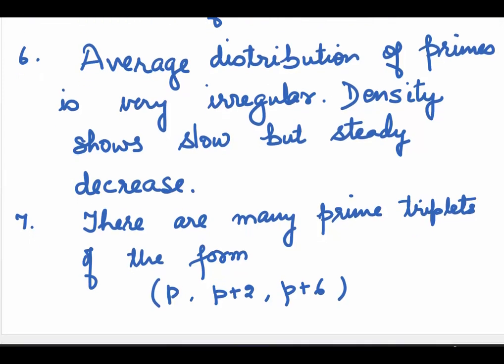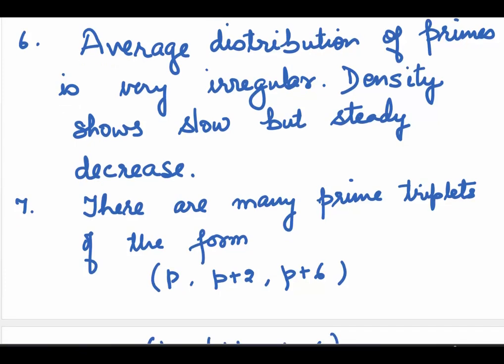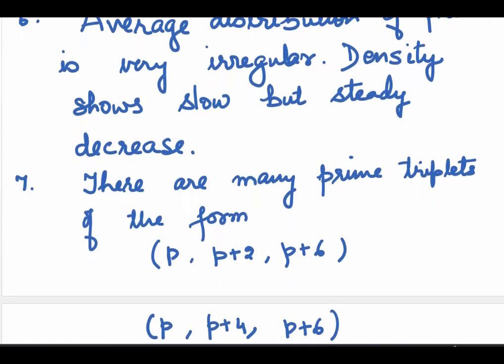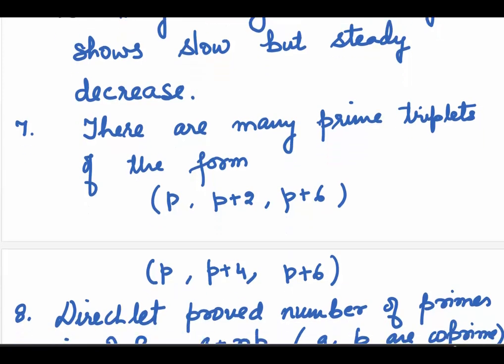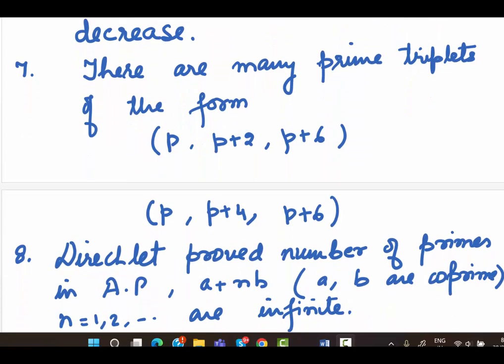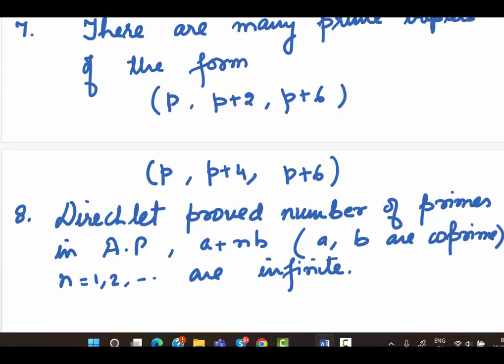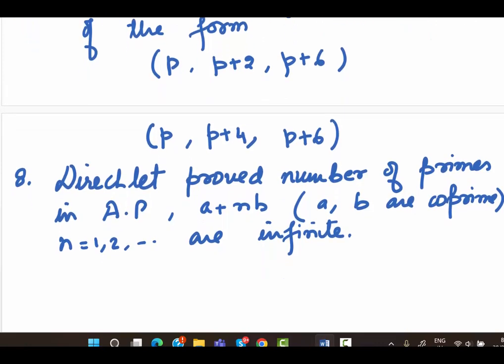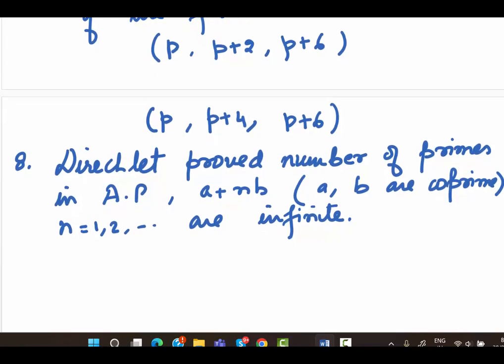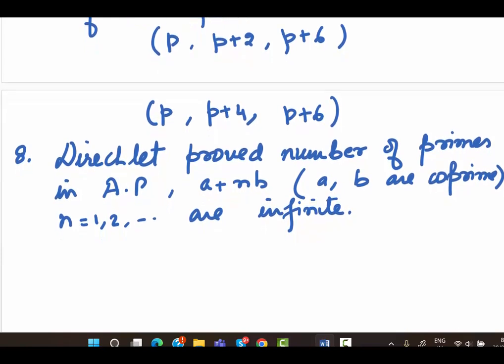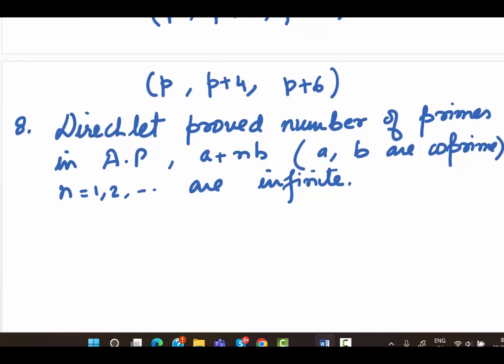There are many prime triplets of the form p, p plus 2, p plus 6, or p, p plus 4, p plus 6, where p is itself a prime. Dirichlet, the famous mathematician, proved that there are infinite number of primes in the arithmetic progression a plus nb, where small a and small b are relatively prime and n takes integer values.